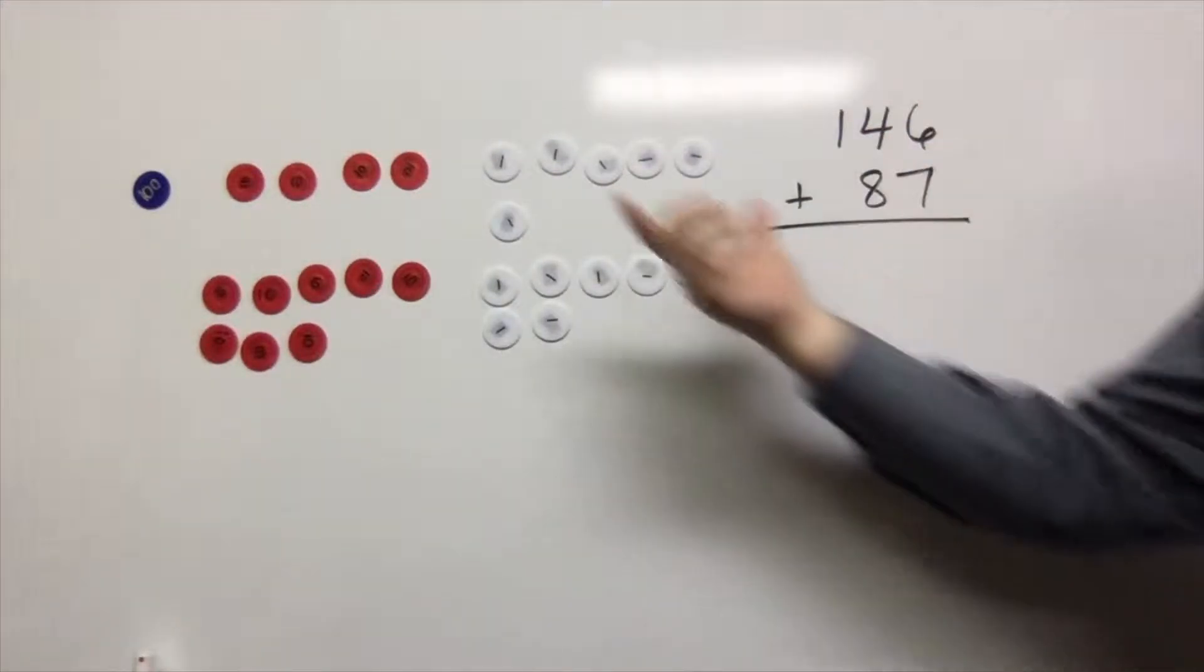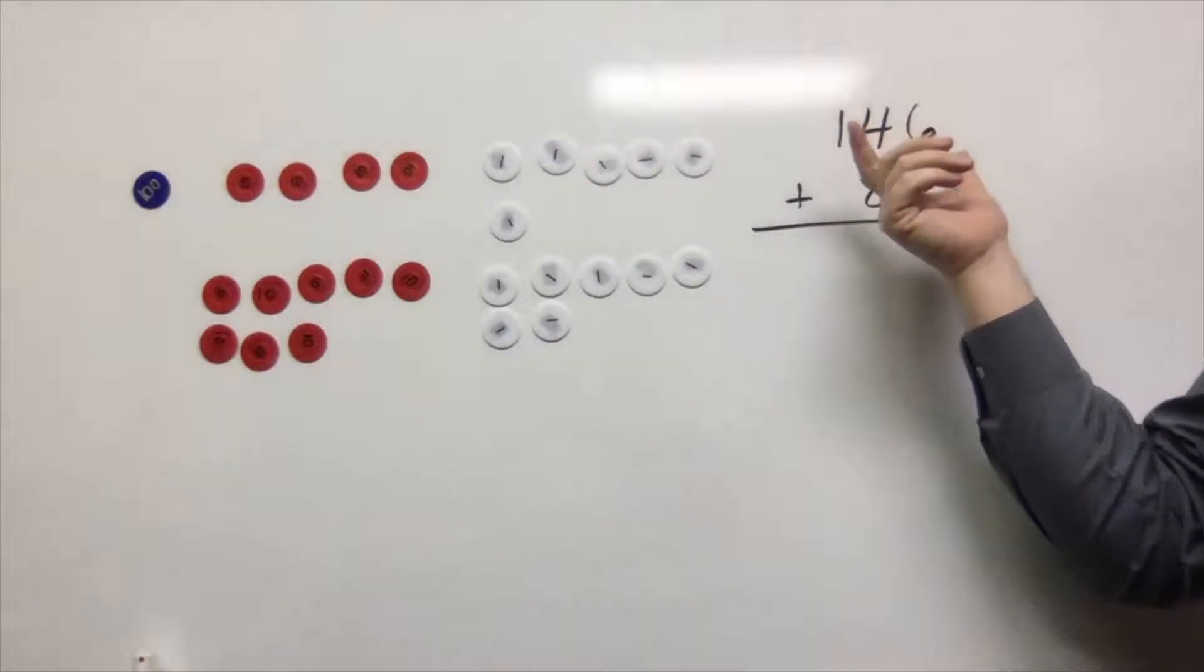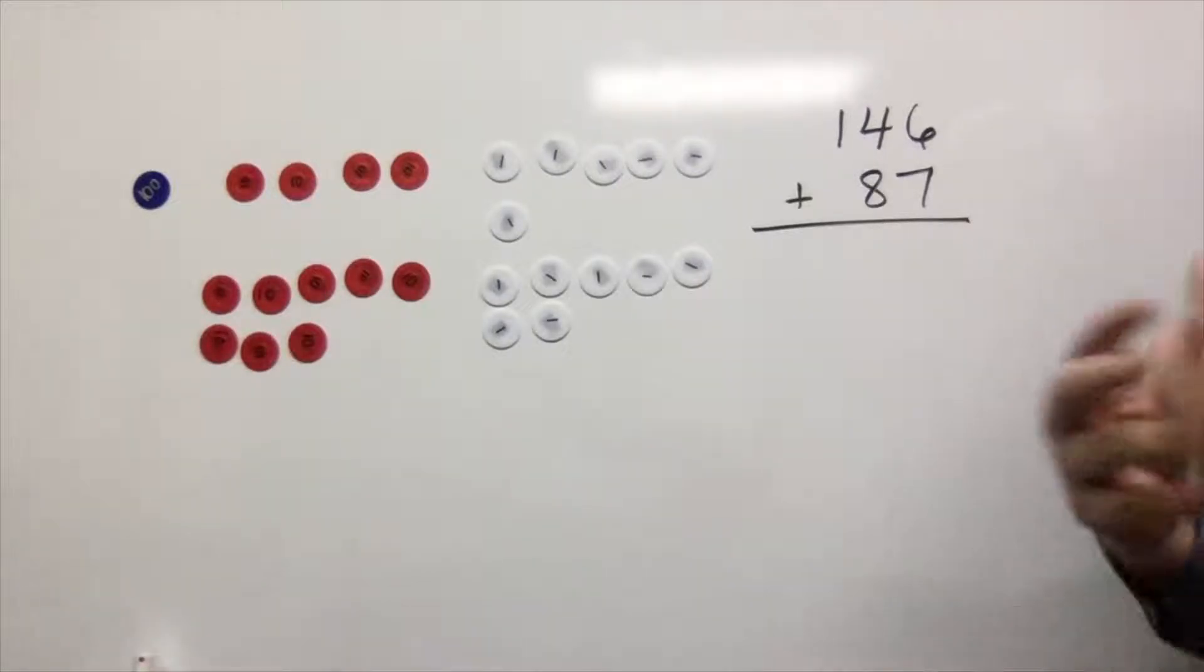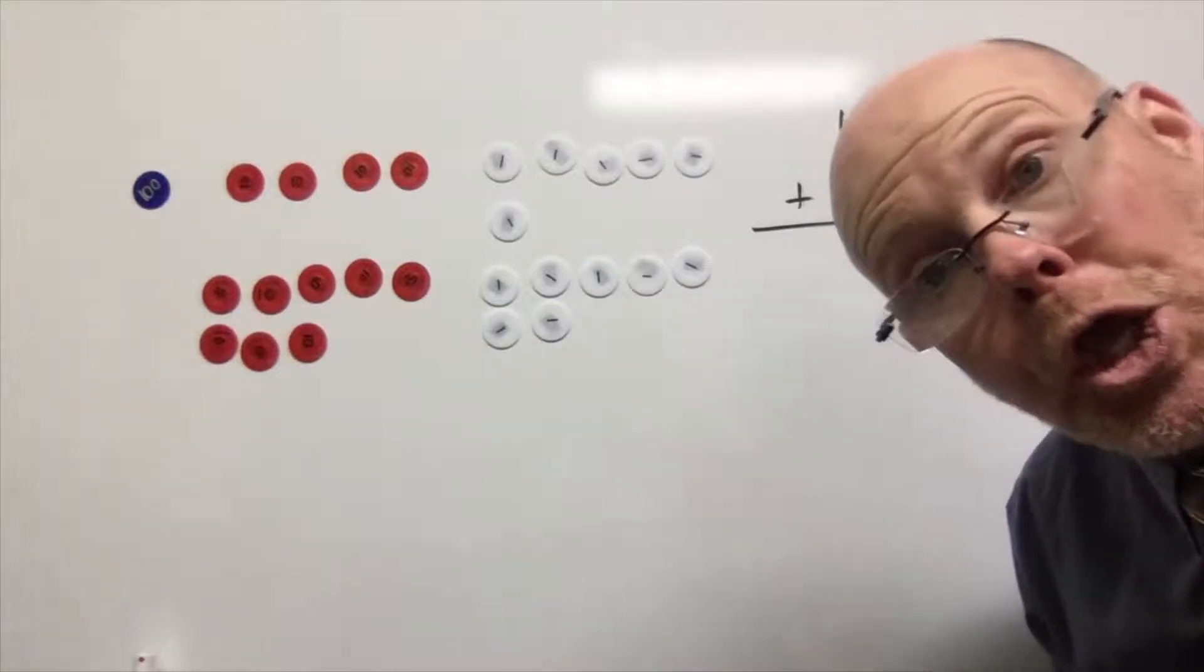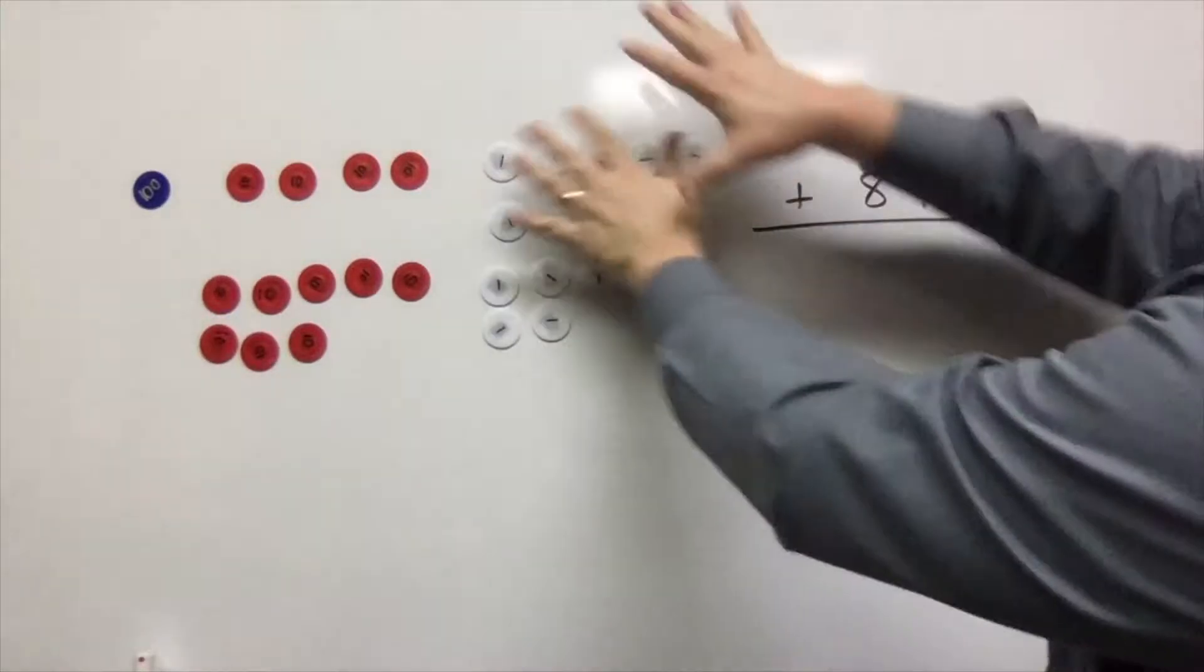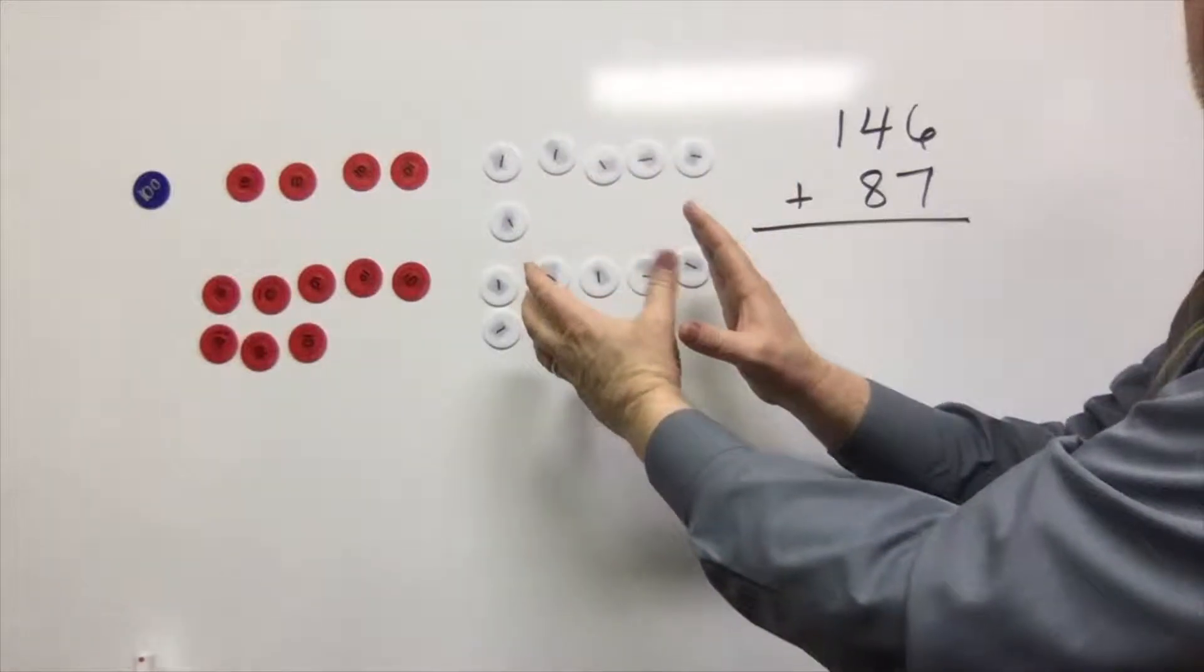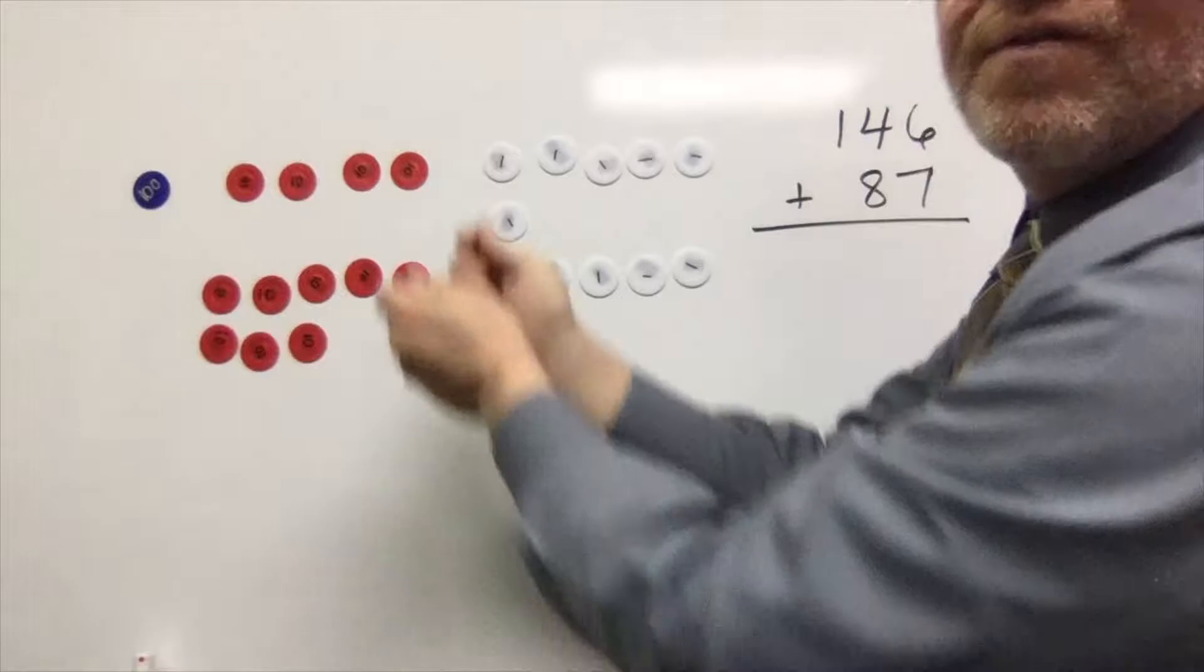So now I've got a hundred, I'm modeling, I'm representing in the concrete, 146 plus 87. Now it's time for me to bundle and unbundle, or sometimes I say cash in. And that's how we're going to represent the addition that's going on. So we understand that anytime we have 10 of one number, we can cash it in for one in the next value over.